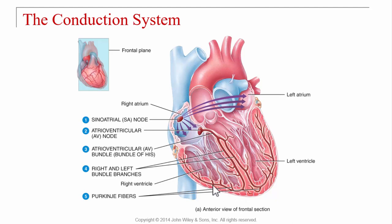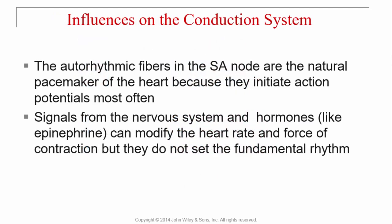The Purkinje fibers propagate an action potential in the cardiac muscle causing contraction of the ventricles. The autorhythmic fibers in the SA node are the natural pacemaker — also called the anatomical pacemaker — because this is what initiates action potentials most often. If it's not available, other areas of the heart will become the pacemaker, but it won't be as effective. Signals from the nervous system and hormones like epinephrine can modify heart rate and force of contraction, but they don't set the fundamental rhythm.